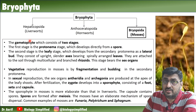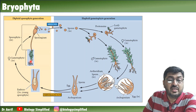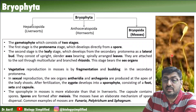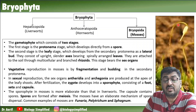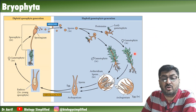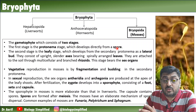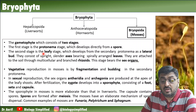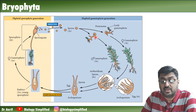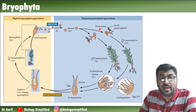Now, mosses - Bryopsida. The life cycle diagram shows the foot, seta, and capsule on the green gametophyte. The brownish structure is the sporophyte. The gametophyte consists of two stages: the first stage is called the protonema, which develops from the haploid spore. The second is the leafy stage. The leafy gametophyte develops from the secondary protonema.